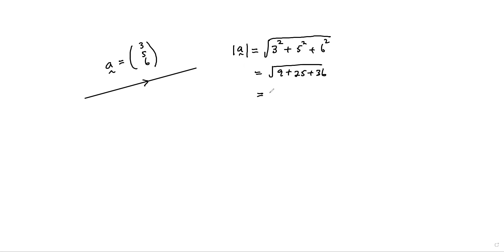And that will be 70, square root of 70. So obviously this is not one. A unit vector is basically a vector with magnitude one.